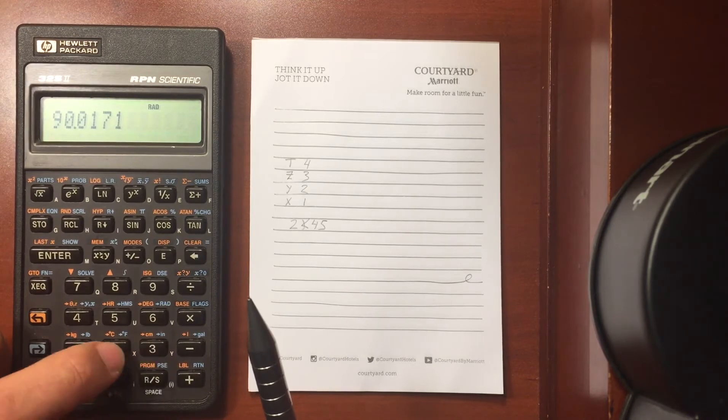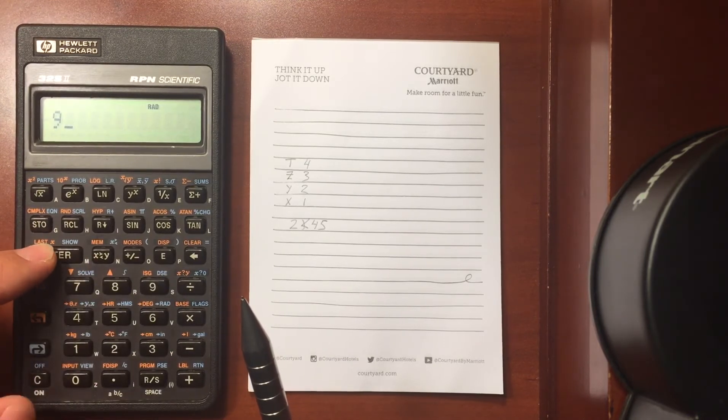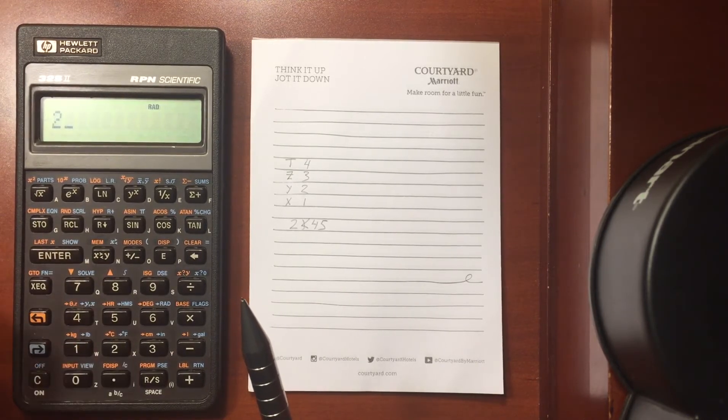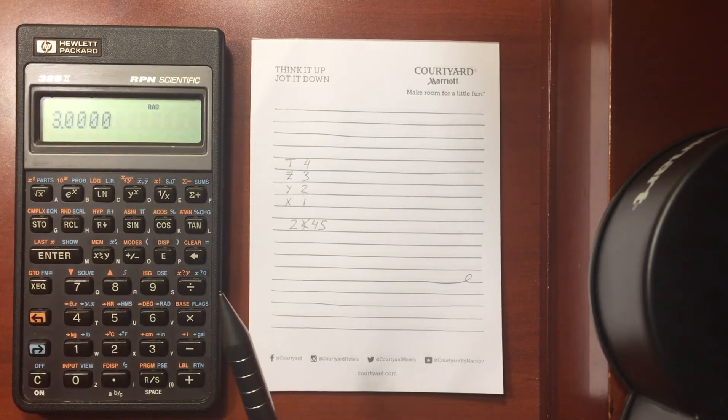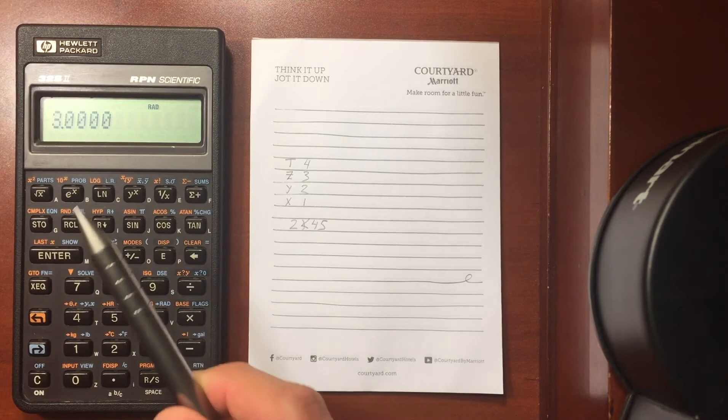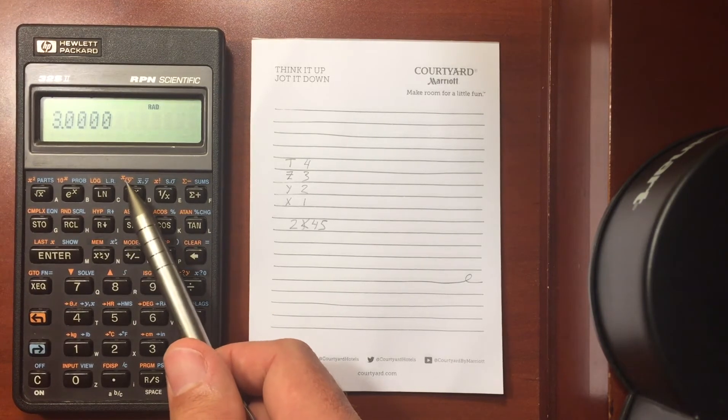So if I have 9, and I want to find the square root of it, I can do shift and find that the square root of Y, or square root of 9, is 3. But I can do that for any number, it doesn't have to be a square root.